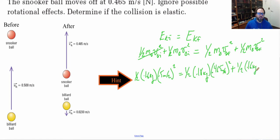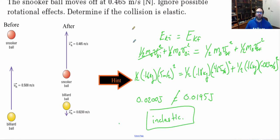So now when I calculate these, I'm going to end up getting 0.0200 joules on my initial and 0.0195 joules for my final, which is not equal. And therefore it is inelastic. And we must lose some energy to sound or heat or something else.